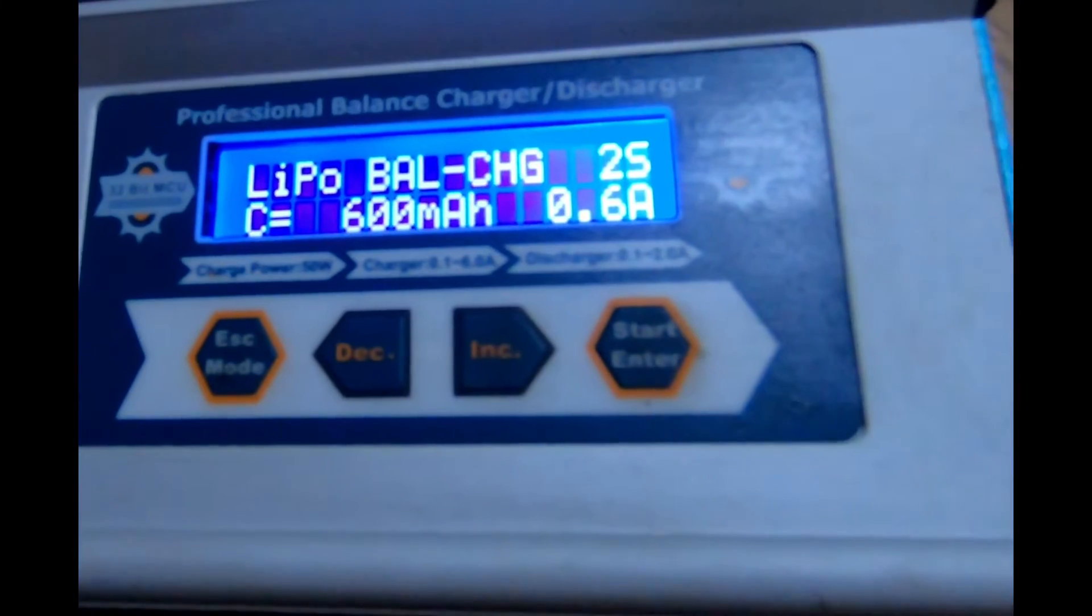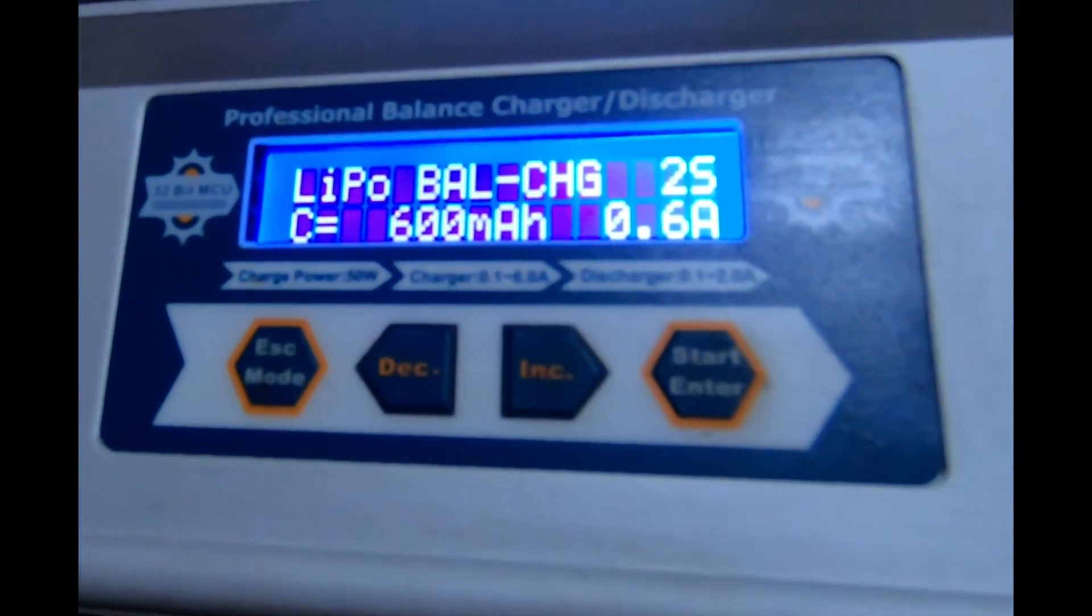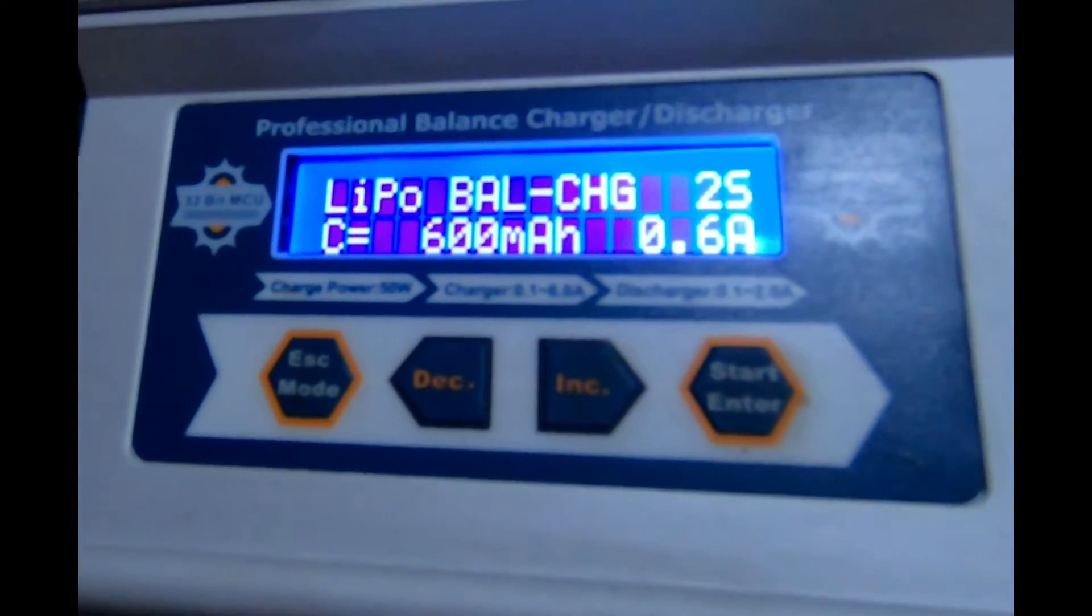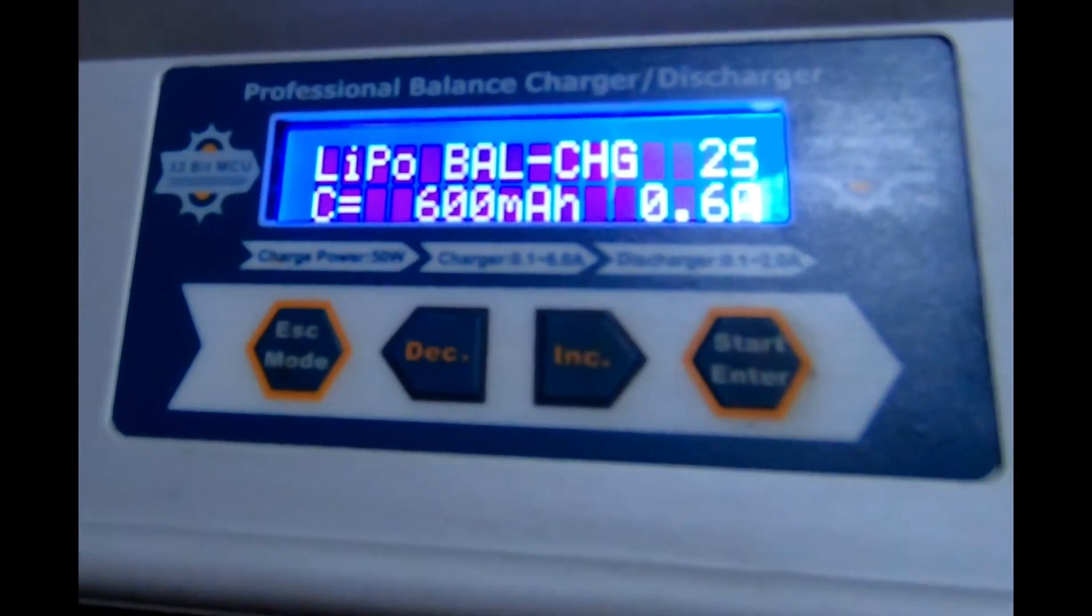And then my charger, once I've done that, so you see LiPo charge, balanced charge, two cell, the C rating is 600 milliamps, which is about 2C.